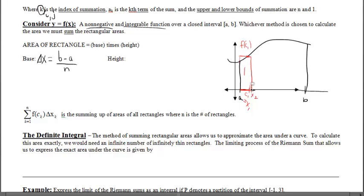Somewhere between x-sub-2 and x-sub-3, maybe closer to x-sub-2 but not at x-sub-2, not at x-sub-3, and not at the midpoint, I choose a c value between x-sub-2 and x-sub-3 — c-sub-2 — because it puts me in the second rectangle. C-sub-2 determines the height of this rectangle. I find the area in rectangle 2 and sum it to the area in rectangle 1.